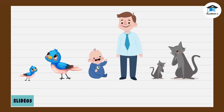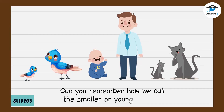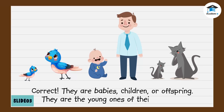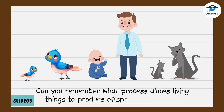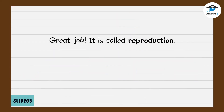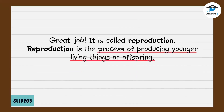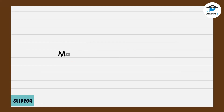Look at these images. Can you remember how we call the smaller or younger ones? Correct, they are babies, children, or offspring — they are the young ones of their parents. Can you remember what process allows living things to produce offspring or children? It is called reproduction. Reproduction is the process of producing younger living things or offspring.